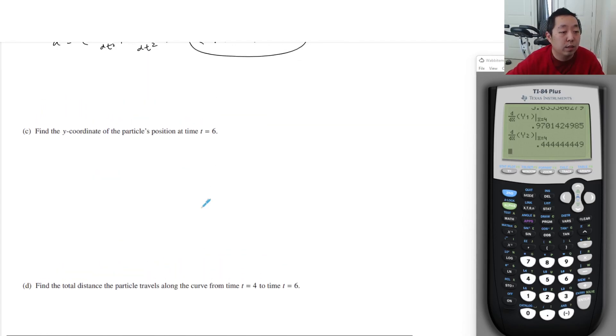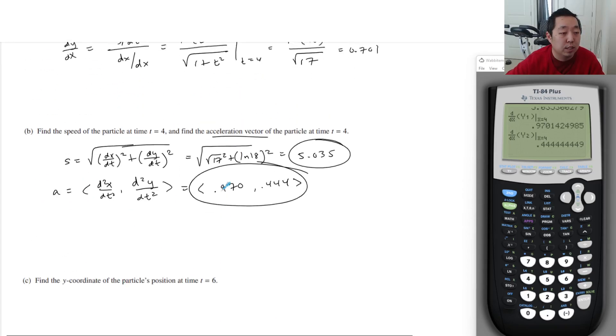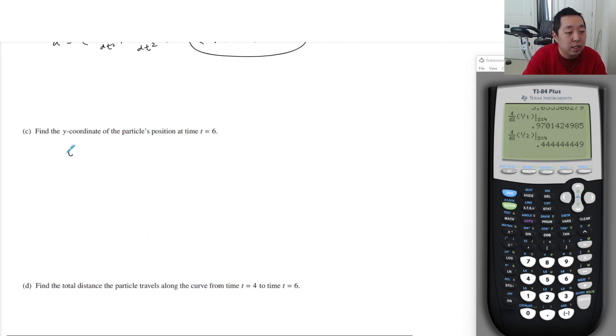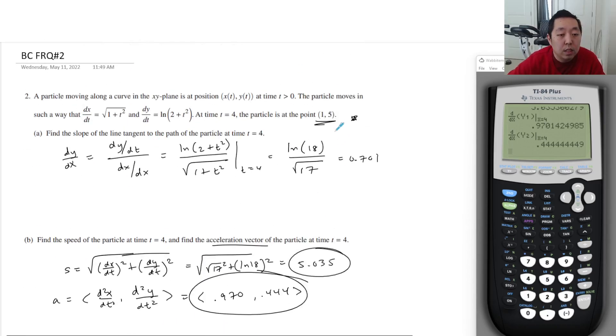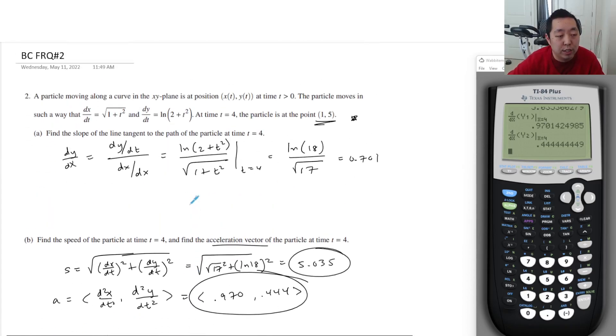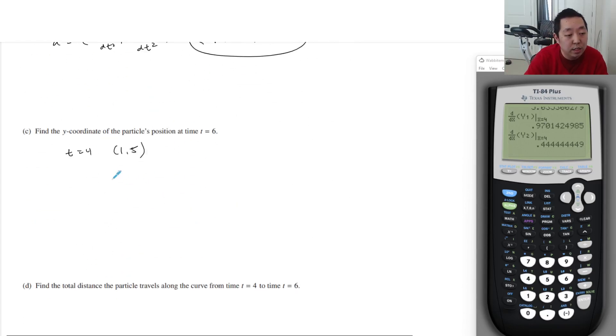Find the y coordinate of the particle's position at time t equals 6. So we got to do basically integral of everything, antiderivative. The way you would do this is you know that at time 4 you have this position. So at t equals 4, we know the position is (1, 5). So how can you do this? Because I can't just do a generic antiderivative of this.